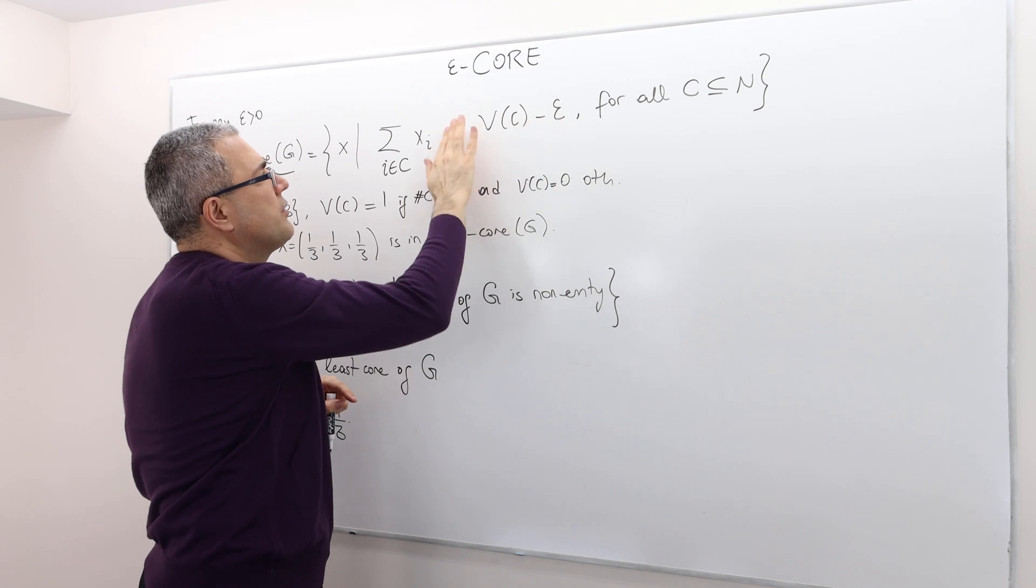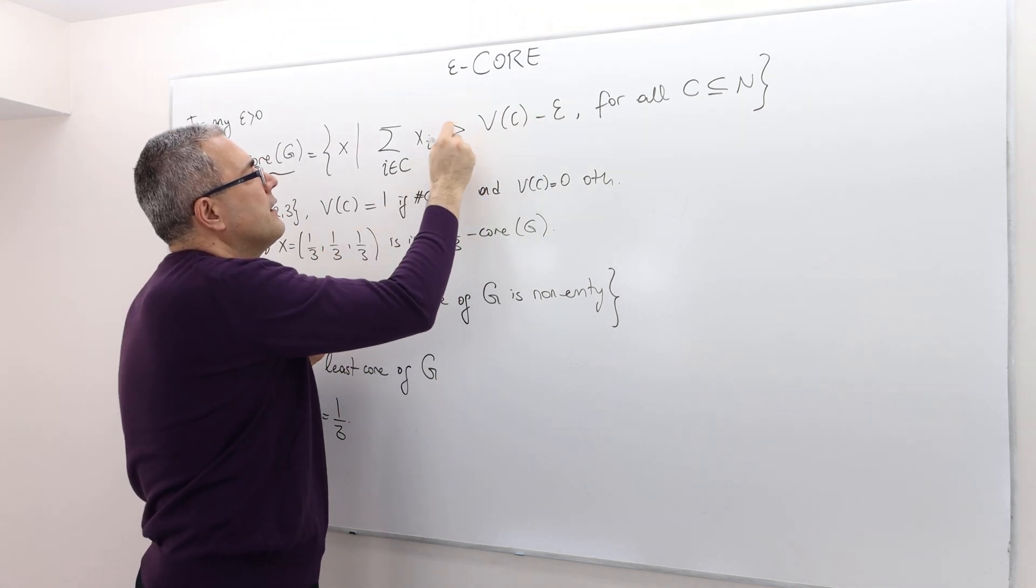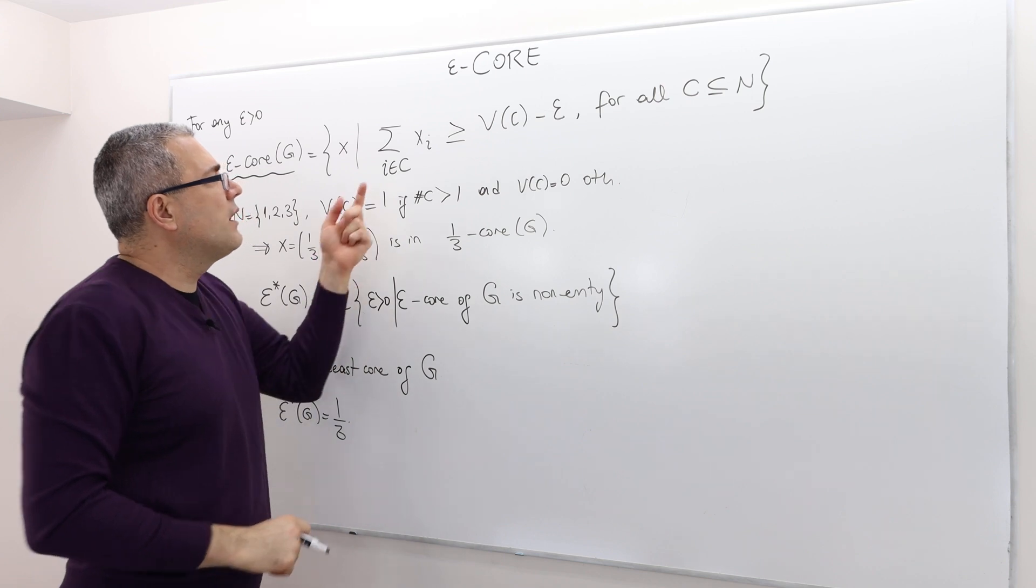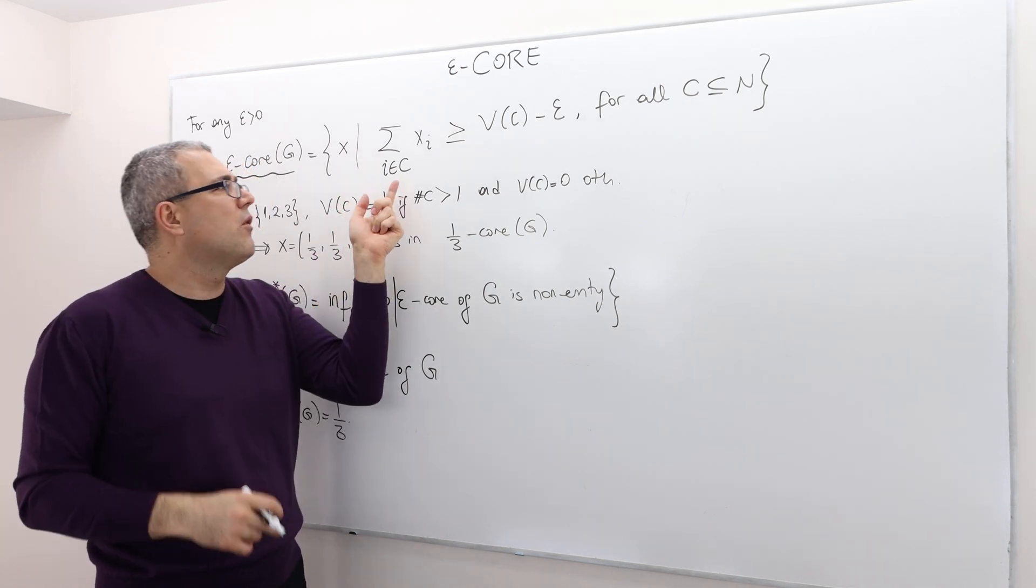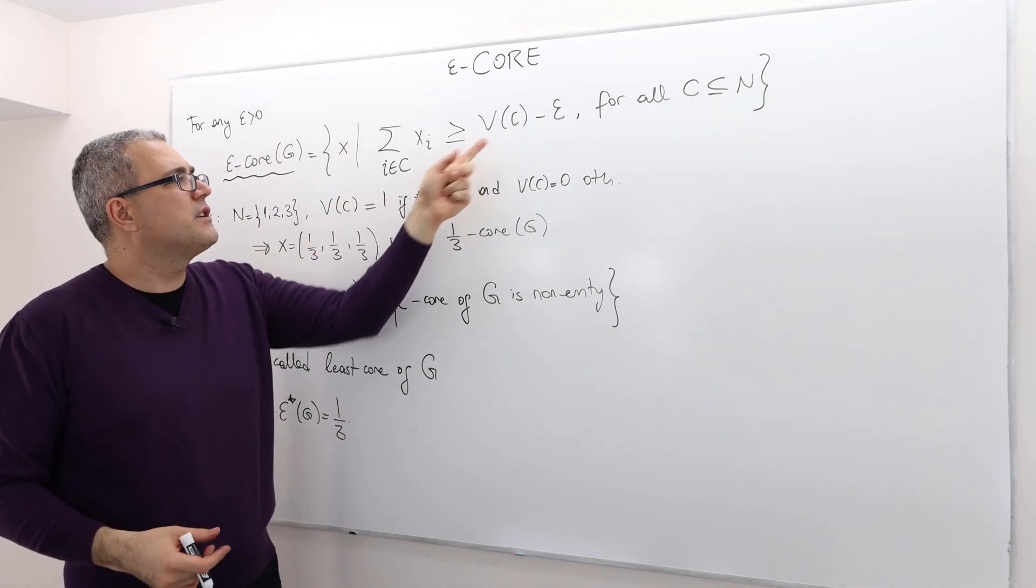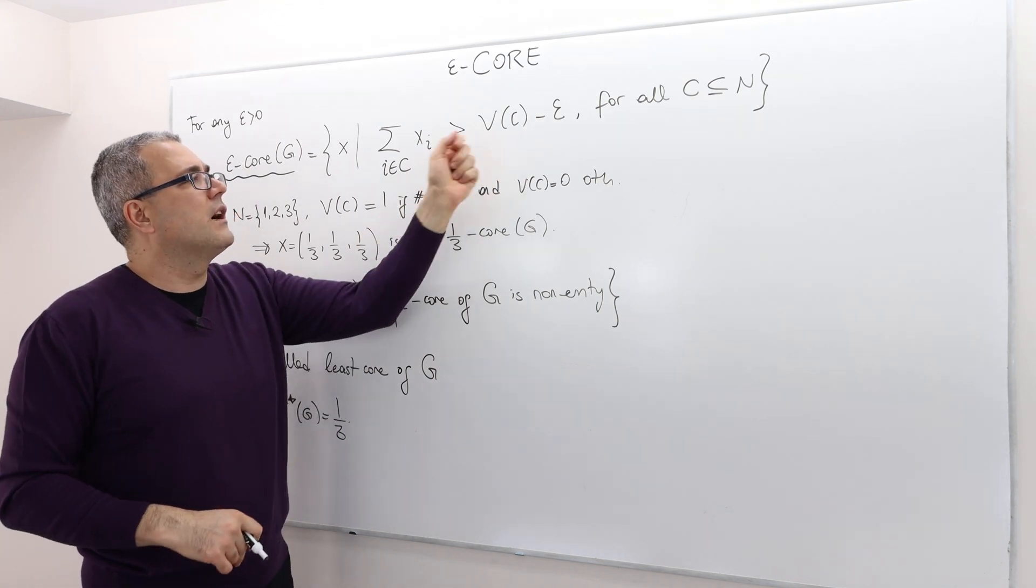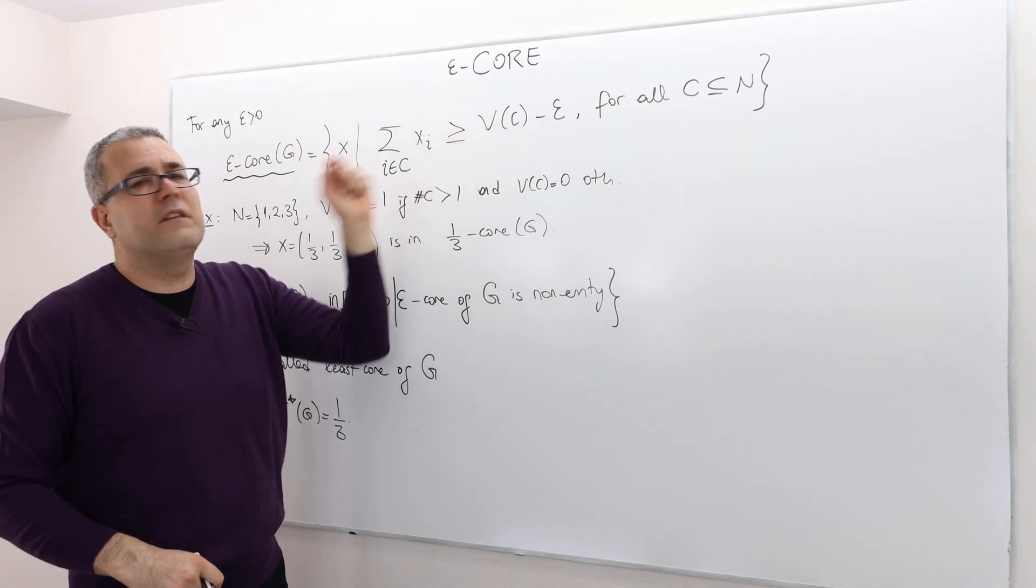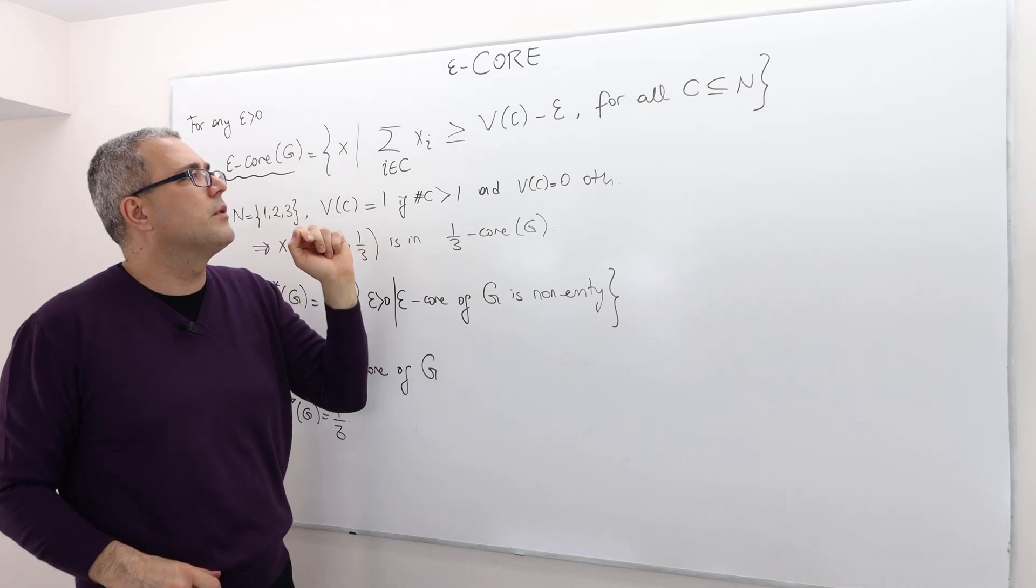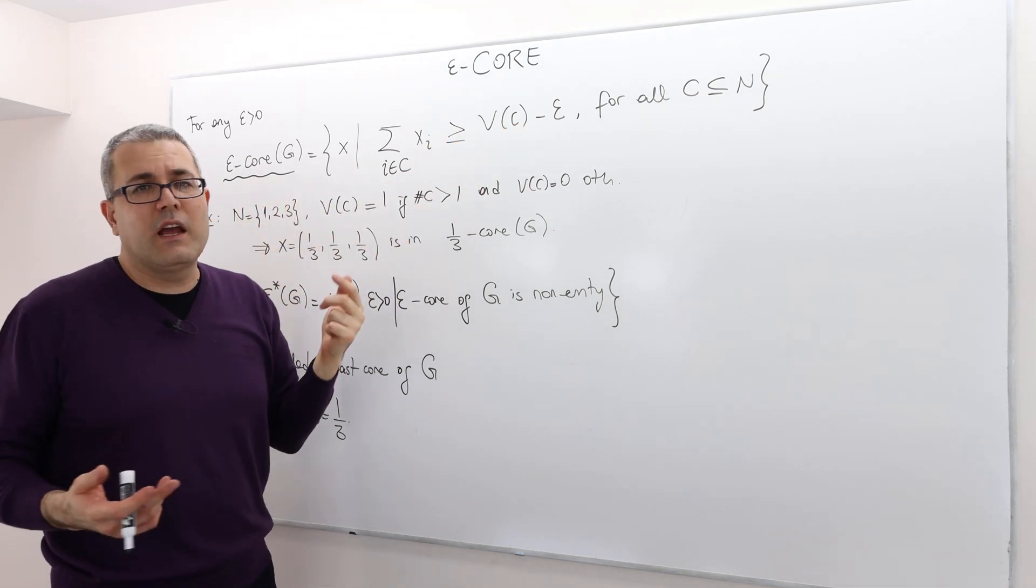But when I subtract Epsilon here, and if this is true, then the incentive of this coalition is not huge. It's just slightly less than the worth of C, for example. Obviously, Epsilon can be anything.